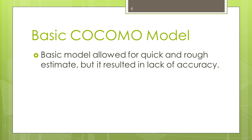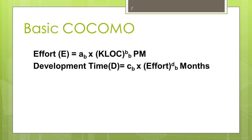Basic COCOMO allows for a quick and rough estimate but lacks accuracy. The basic COCOMO model gives an approximate estimate of the project parameters. The basic COCOMO estimation model is given by expressions for effort and development time, where KLOC is the estimated size of the software product expressed in thousands of lines of code. The constants AB, BB, CB, and DB are defined for each category of software project — whether the product is in organic mode, semi-detached mode, or embedded mode.